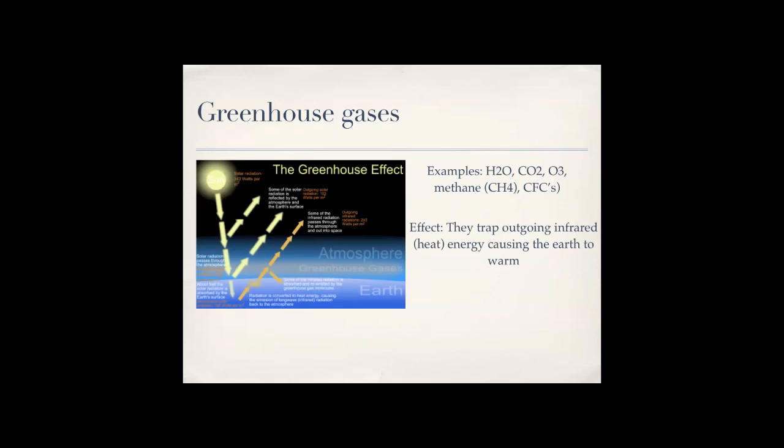Now, the greenhouse gases, some examples: you might have water vapor, CO2, ozone which is O3, methane CH4, and CFCs. CFCs were banned by the Montreal Protocol, so those are not as much in it. The effect of the greenhouse gas, the greenhouse effect, is they trap outgoing infrared heat energy, causing the Earth to warm. So the more there are, the more these element compounds that are in the air, you get a warmer Earth.